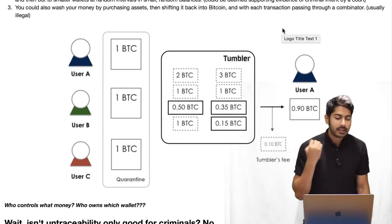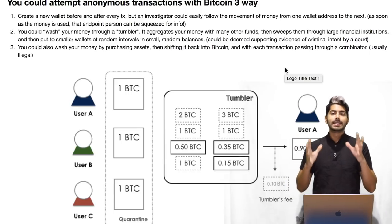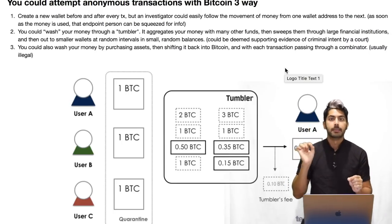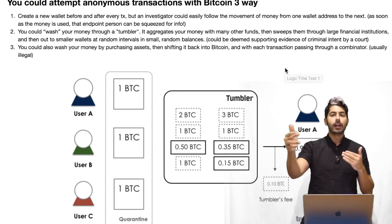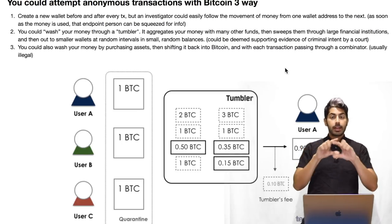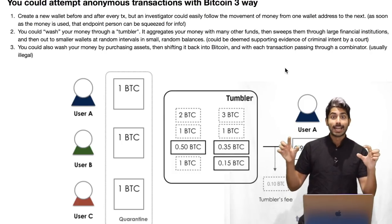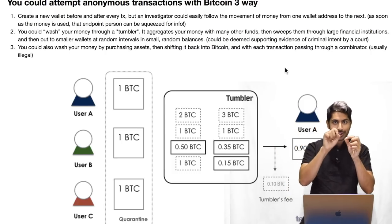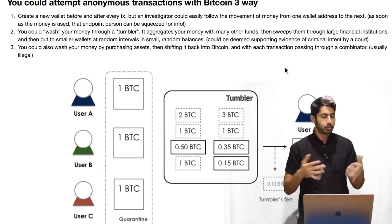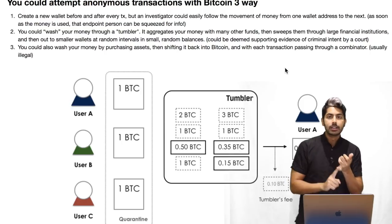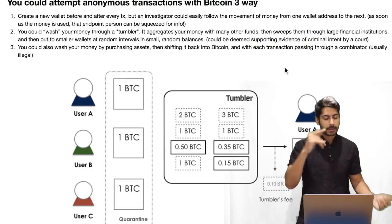You could attempt to make anonymous transactions in Bitcoin three ways. Bitcoin is not anonymous — it's pseudonymous — meaning even if someone traces back the trail of transactions to you, that's still just your public address, which says nothing about your identity. However, there are ways to find ownership: IP addresses, finding the endpoints, and so on.